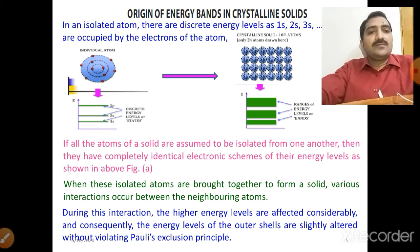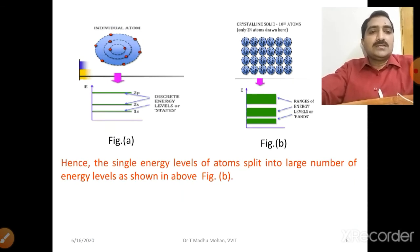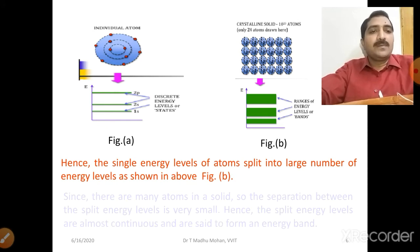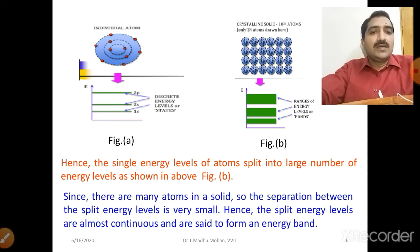In an individual atom, the energy levels are singlet energy levels. When considering a solid containing a large number of atoms, all the single energy levels of individual atoms combine to form a band, as shown in figure B. The single energy levels split into a large number of closely spaced levels. Since the separation between split energy levels is very small, they are almost continuous and are said to form an energy band.